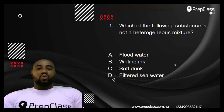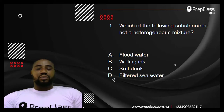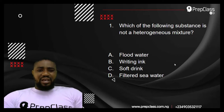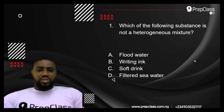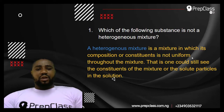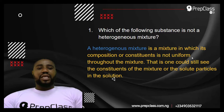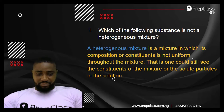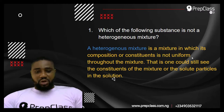Question number 1: Which of the following substances is not a heterogeneous mixture? The first thing we ask ourselves is: what is a heterogeneous mixture? A heterogeneous mixture is a mixture in which its composition of constituents is not uniform throughout the mixture.